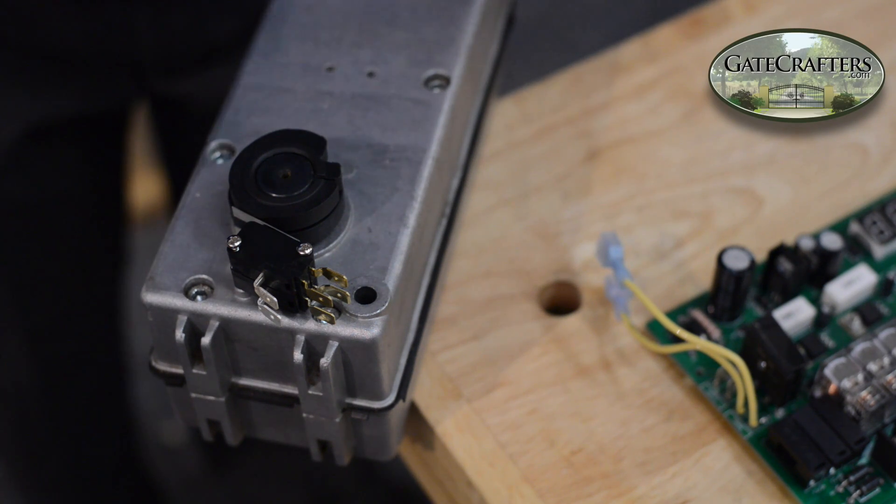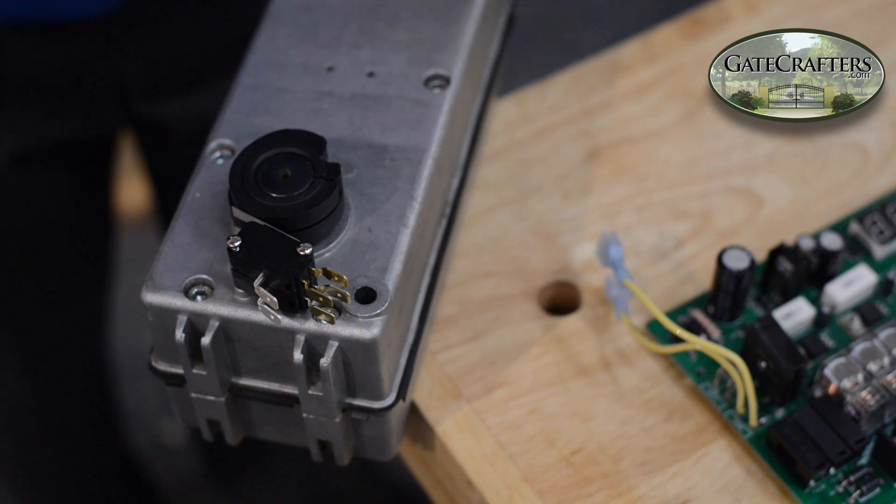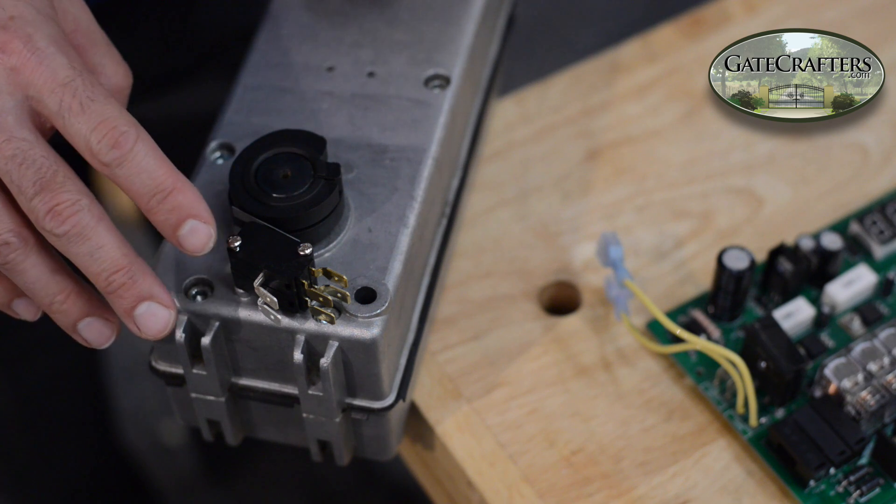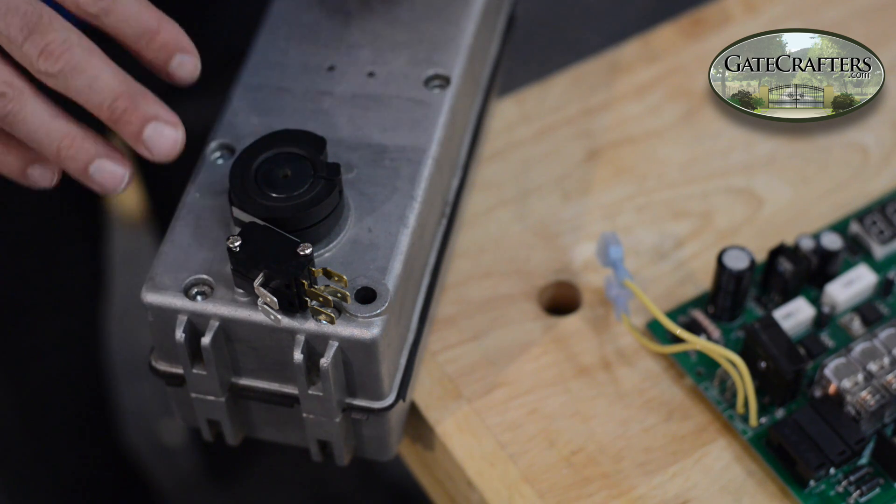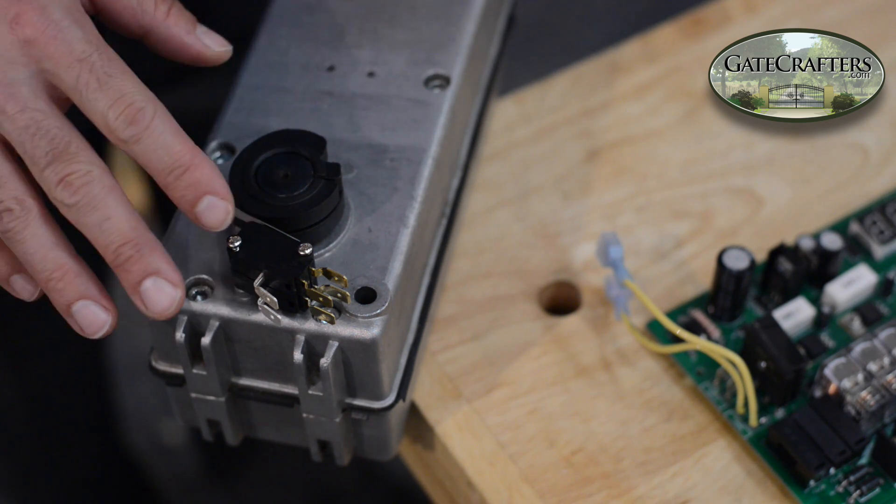This video is a demonstration on how to wire in your ESC-1602 to the new ES Classic Board. You're going to need limit switches on your ESC-1602, so if you don't already have limit switches you're going to have to purchase them.